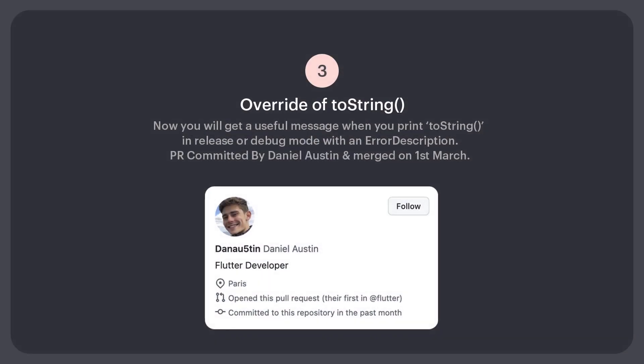Number 3: Now you will get a useful message when you print two strings in release or debug mode with an error description. PR committed by Daniel Austin and merged on 1st March.